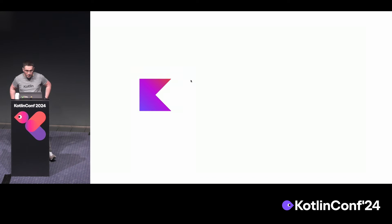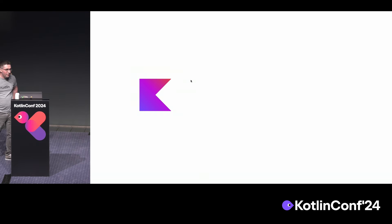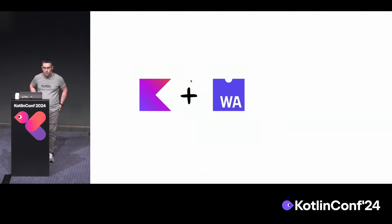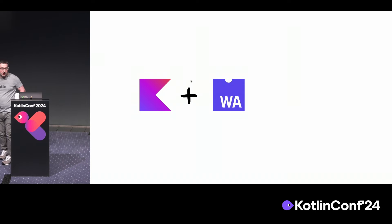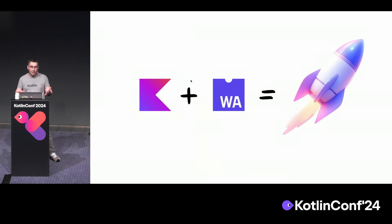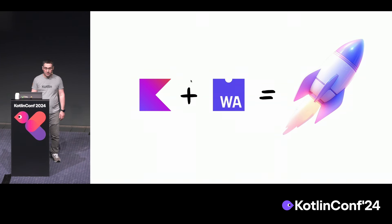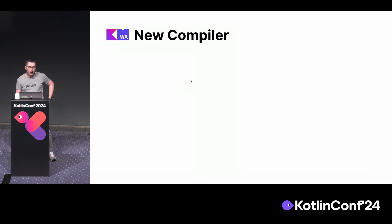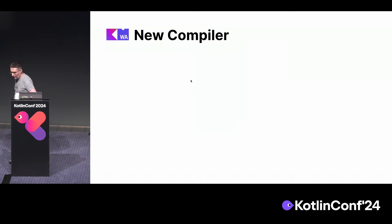Let's move to Kotlin Wasm. We have a great language, a good ecosystem, and a great friendly community. So let's add WebAssembly to all of this. Kotlin Wasm aims to combine these two powerful technologies and allow developers to write efficient and portable code, building a wide range of applications — from high-performance web applications to serverless functions or IoT.